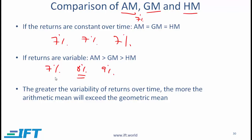If returns are variable, the arithmetic mean will be greater than the geometric mean, which is greater than the harmonic mean. Furthermore, the difference between the arithmetic mean and the geometric mean increases as variability increases — for example, returns of 5%, 8%, and 11% will show a larger gap than returns of 7%, 8%, and 9%. You should verify this at least once to convince yourself.